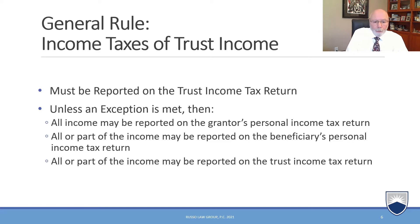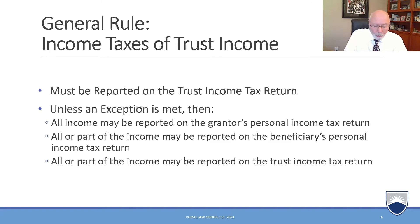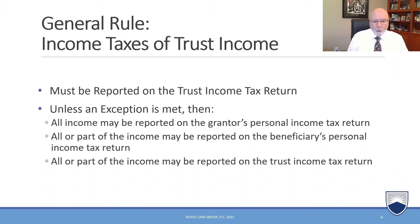The second exception is all or a part of the income may be reported on the beneficiary's personal income tax return. It depends on how the trust is drafted — the beneficiary may be reporting all or part of the trust income even though it's not a grantor trust, which we'll refer to as a non-grantor trust situation. The third would be all or part of the income may be reported on the trust income tax return itself, also referred to as a non-grantor trust.